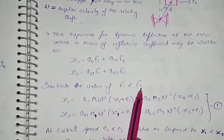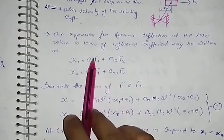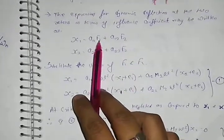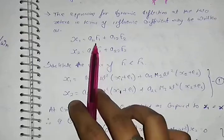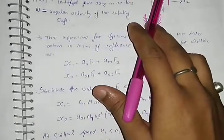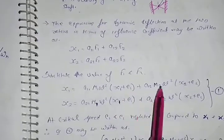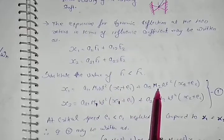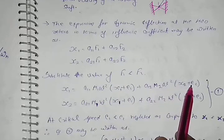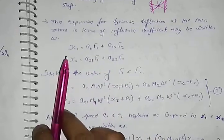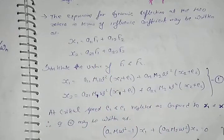Now substitute the value of F1 and F2. The value of F1 is M1*omega^2*(X1 + E1). X1 + E1 is eccentricity from the CG of the rotor. Plus A for the value of F2, M2*omega^2*(X2 + E2). Same in case of X2, put the value of F1 and F2, we got this. This is equation number 1.